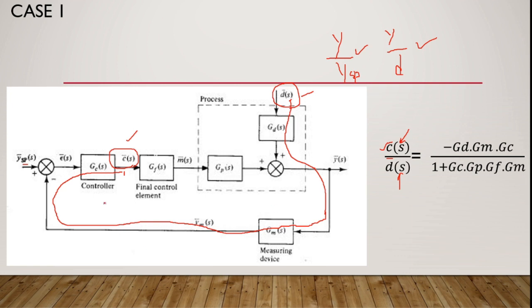So how many blocks have you crossed? We have crossed this one block, another block, another block, another block. These three blocks have been included in the numerator of this expression. Also, there is a minus sign over here. So where does that come from?